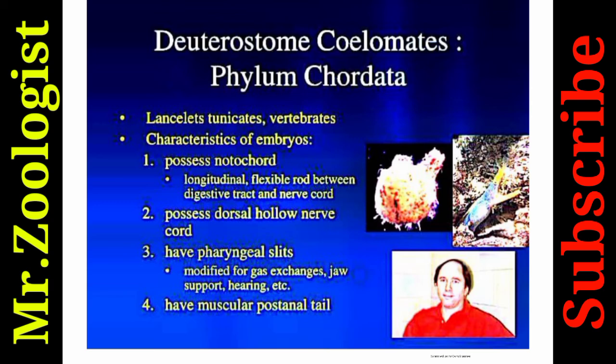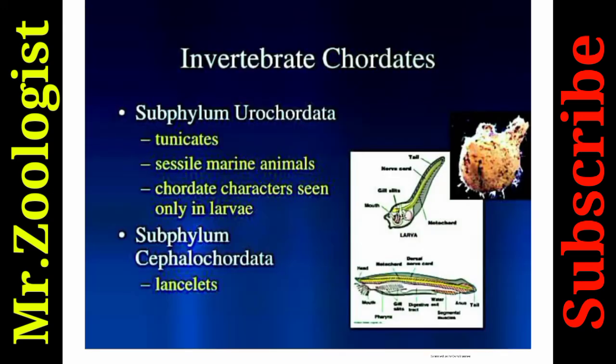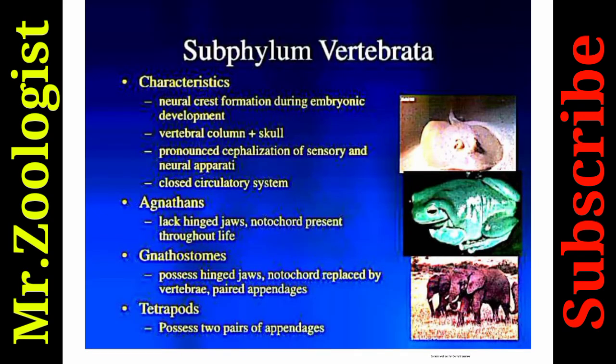Chordates possess a dorsal hollow nerve cord, pharyngeal slits modified for gas exchange, a muscular post-anal tail, and jaws for support. Invertebrate chordates: Subphylum Urochordata includes tunicates — sessile marine animals whose chordate characters are seen only in larvae. Subphylum Cephalochordata includes lancelets. Subphylum Vertebrata characters include neural crest formation during embryonic development.